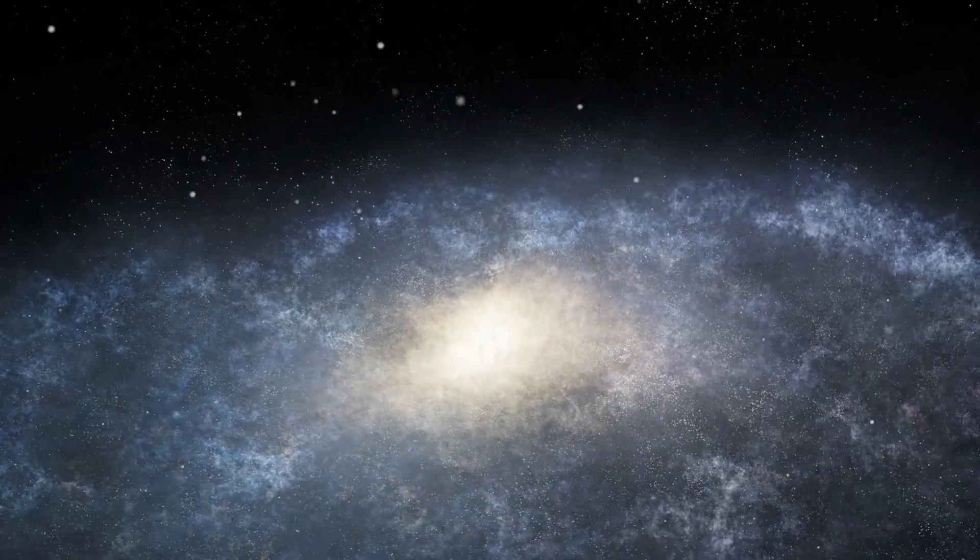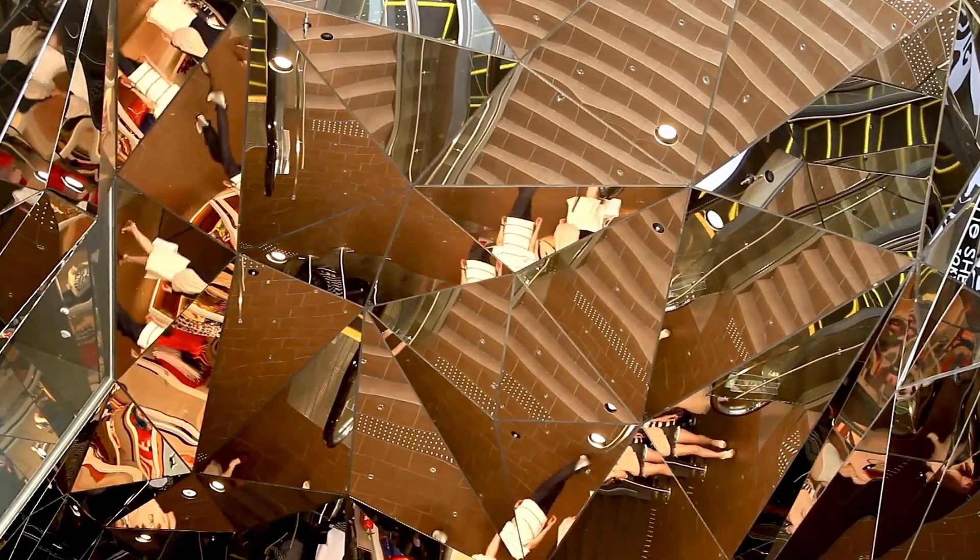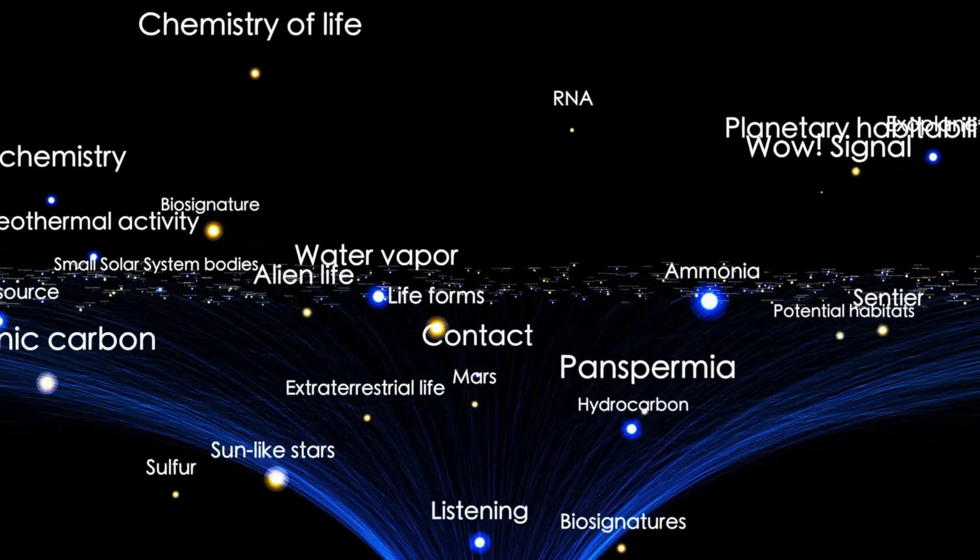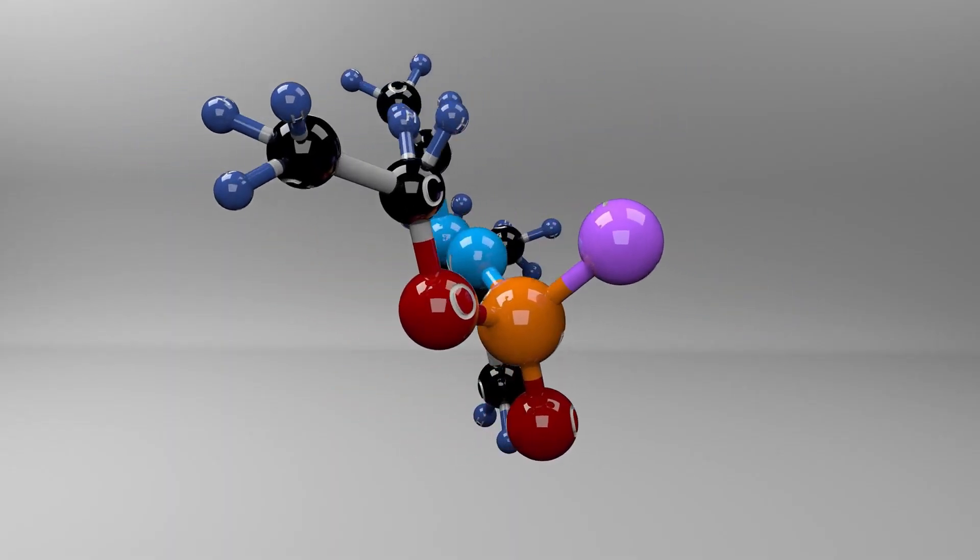One theory is that Oumuamua might be a fragment of a larger object that was torn apart by tidal forces during a close encounter with a star. This could explain its elongated shape, which resembles a cigar and is unlike anything previously seen in our solar system. However, this still doesn't account for the acceleration without visible outgassing.